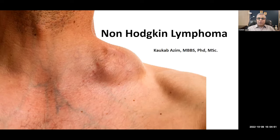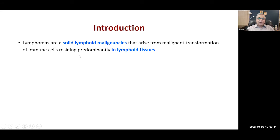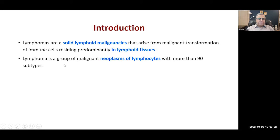We are going to do non-Hodgkin lymphoma. You can see this big lump which is highly indicative of a lymphoma. Lymphomas are basically tumors that arise in the lymph nodes due to the transformation of cells there. They are solid lymphoid malignancies that arise from malignant transformation of immune cells in lymphoid tissue, including B cells, T cells, macrophages, and dendritic cells, but most commonly arising from B cells. It is a group of malignant neoplasms of the lymphocytes with more than 90 subtypes.